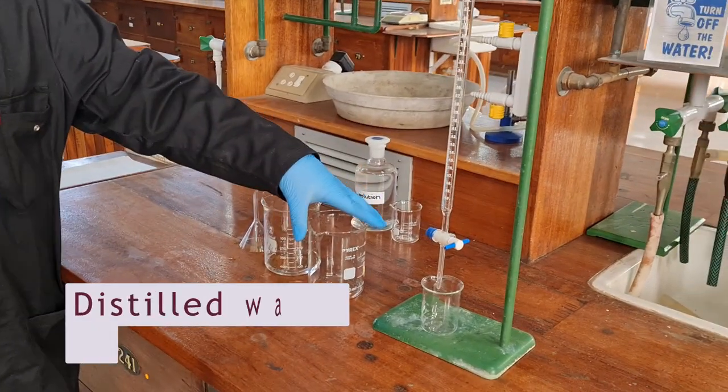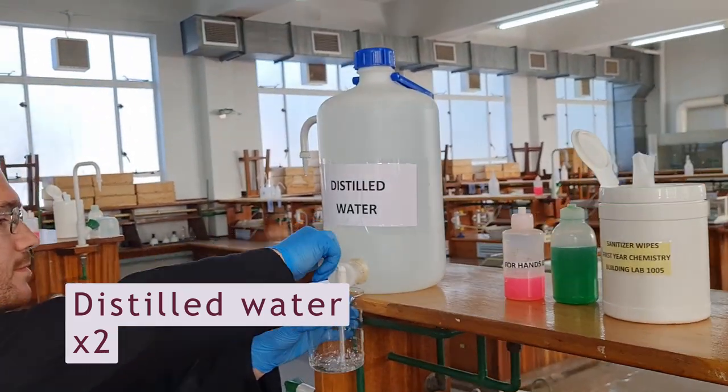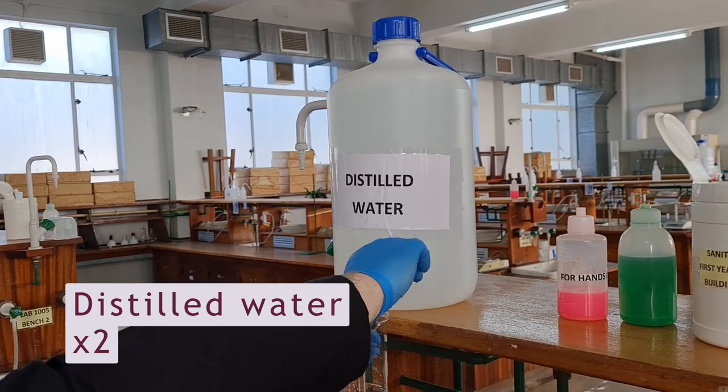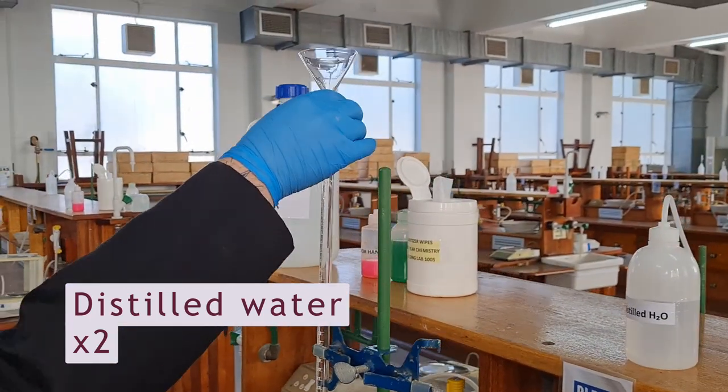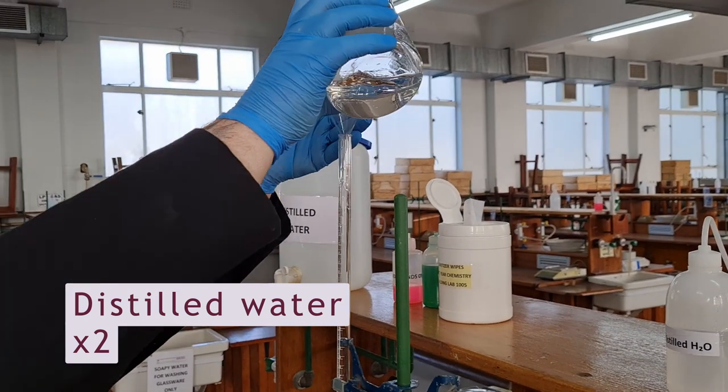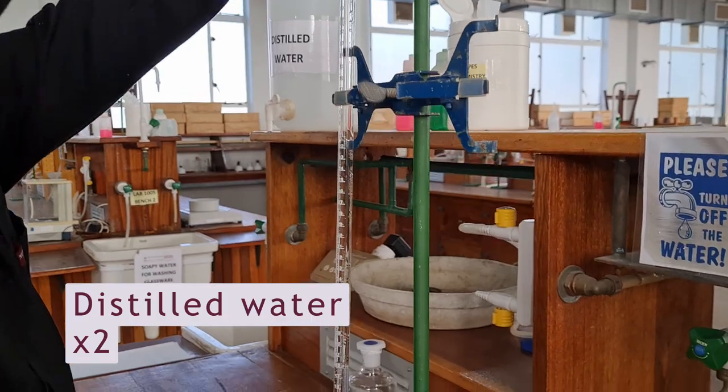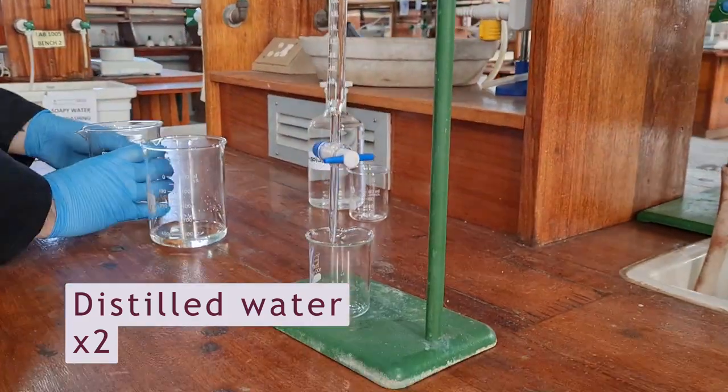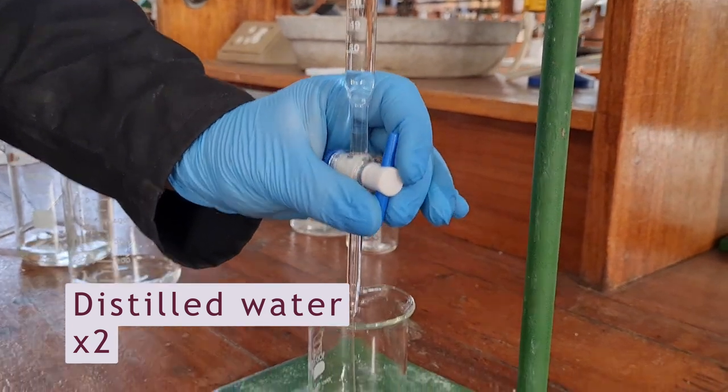Rinse the burette twice with distilled water and once with the solution you are using as follows. First, place the burette in a burette holder and make sure that the burette tap is closed. Place a funnel in the top of the burette and pour about 5 cubic centimeters of distilled water into the burette. Remember to always lift the funnel slightly to allow the solution to flow in freely.